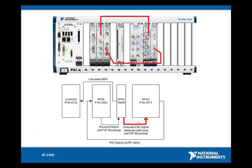Next, the VSG will upconvert the baseband signal to a 1 GHz RF signal with an IQ rate of 25 MB per second. This RF signal will be transmitted to the VSA NI PXIe-5663 through the external cable.